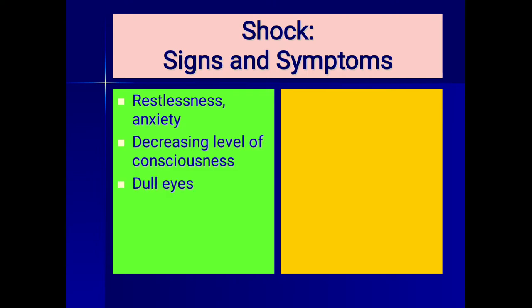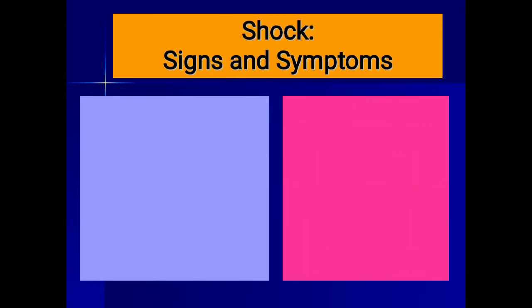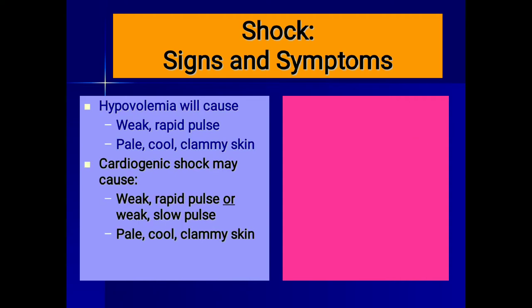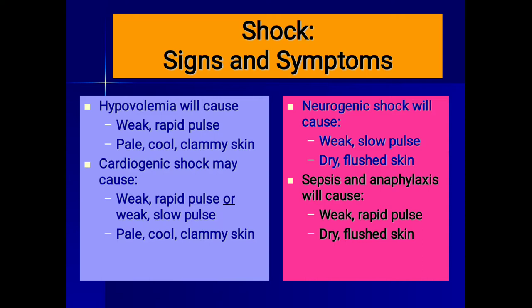Signs and symptoms of shock include restlessness, anxiety, decreasing level of consciousness, dull eyes, rapid shallow respirations, nausea and vomiting, thirst, and diminished urine output. Hypovolemic shock causes weak rapid or thready pulse with pale, cool, clammy skin. Cardiogenic shock may cause weak rapid or weak slow pulse and dry flushed skin. Sepsis and anaphylaxis cause weak rapid pulse and dry flushed skin.